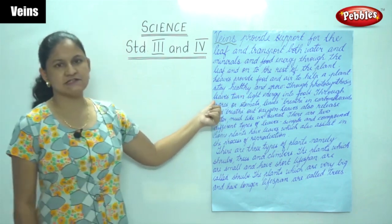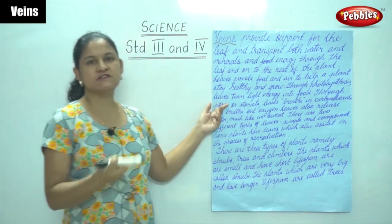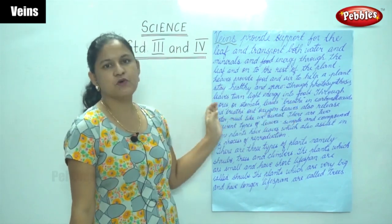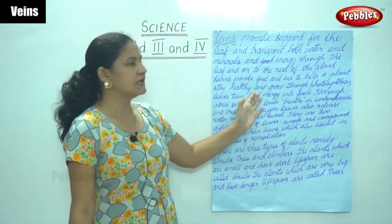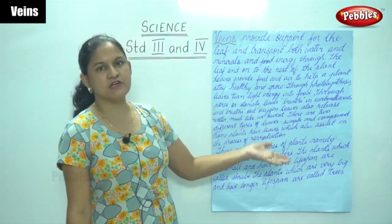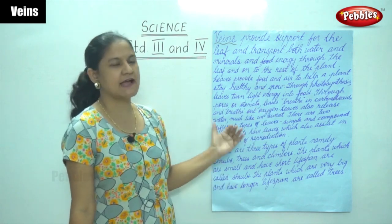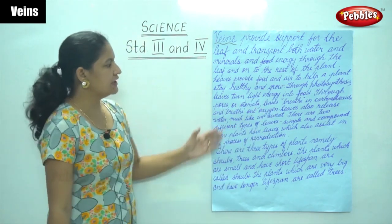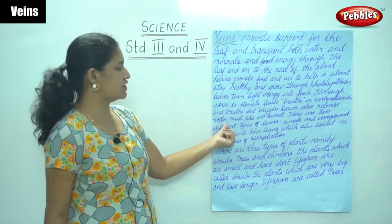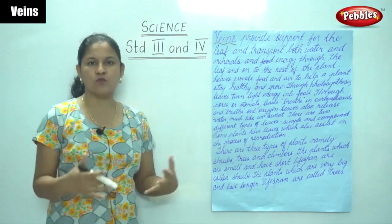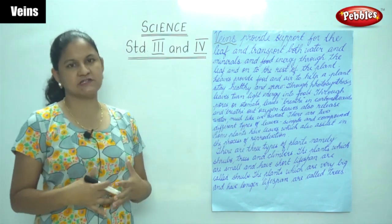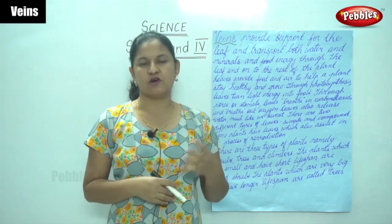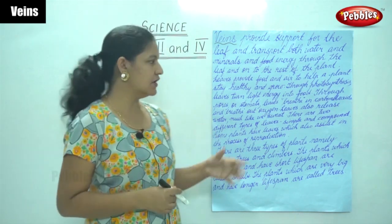Through photosynthesis, leaves turn light energy into food. Through pores or stomata, leaves breathe in carbon dioxide and breathe out oxygen. Leaves also release water much like how we sweat, like how human beings sweat. Leaves also release out excess water.